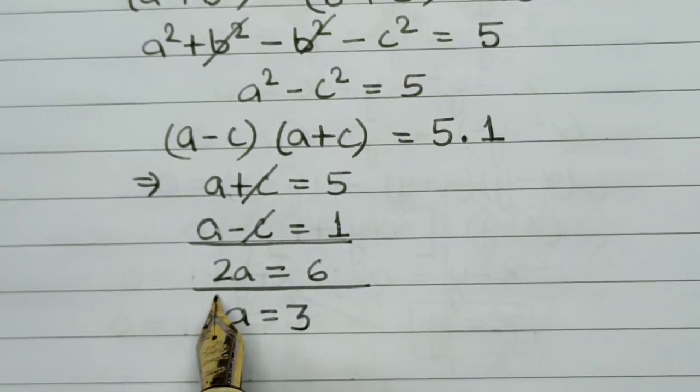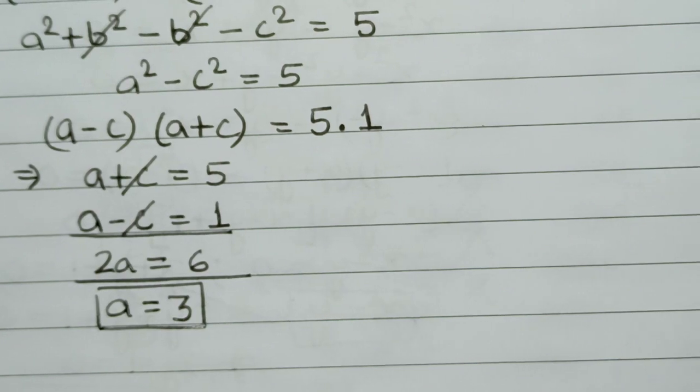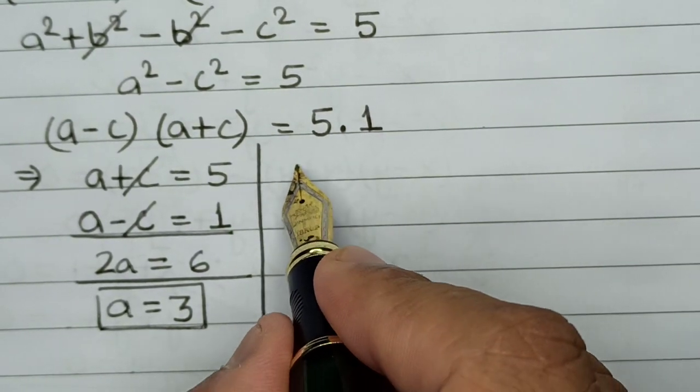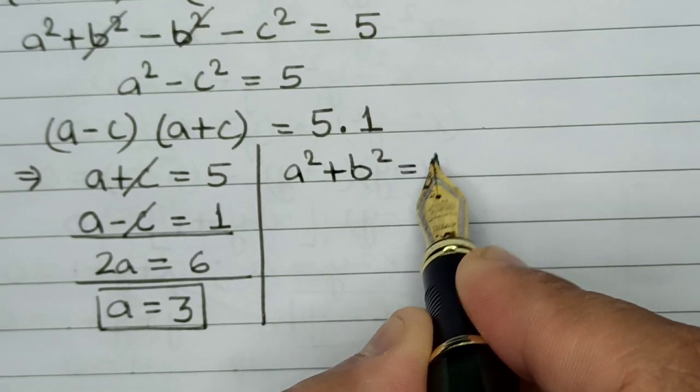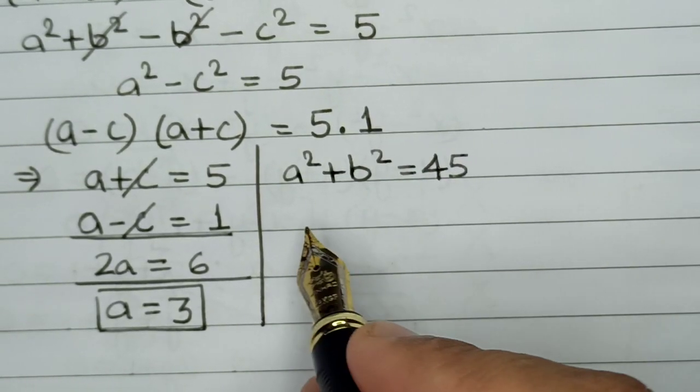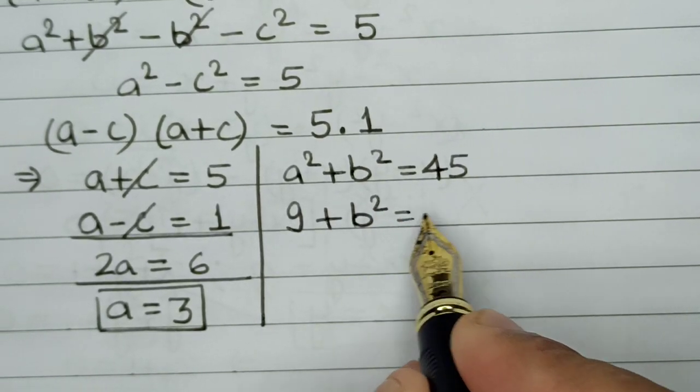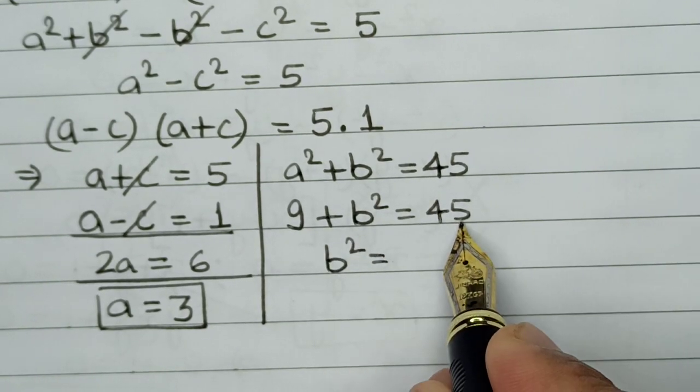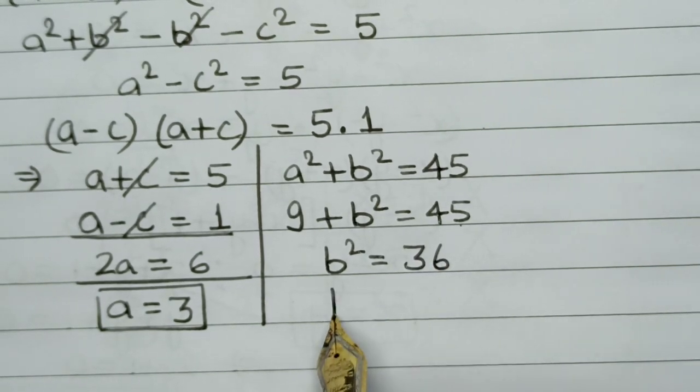Now since we have calculated the value of a, let's proceed towards calculating the value of b. We have the equation a² + b² = 45. Let's substitute the value of a: 9 + b² = 45. So b² will be 45 - 9, that will be 36. So the value of b will be 6.